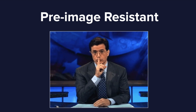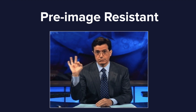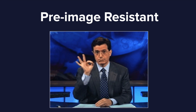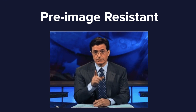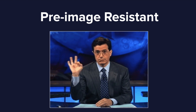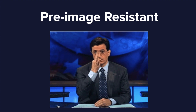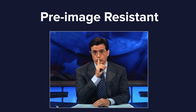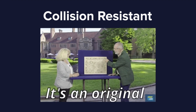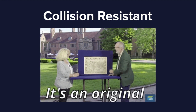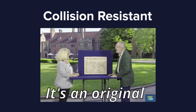A hash function must be pre-image resistant, meaning the output of a cryptographic hash function must not reveal any information about the input. Cryptographic hashing algorithms can receive any kind of input — numbers, letters, words, or punctuation marks; a single character, a sentence, a page, or an entire book. No matter the size, the hash function must not reveal any information about the input. The fourth property is that it must be collision resistant — practically impossible to find two different inputs that produce the same output. While inputs can vary in length, outputs are a fixed size and length, so the hash must not produce the same output for different inputs.